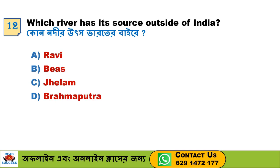Next question: Which river has its source outside of India? Option A. Ravi, Option B. Beas, Option C. Jhelum, Option D. Brahmaputra. Option D, Brahmaputra, is the correct answer.